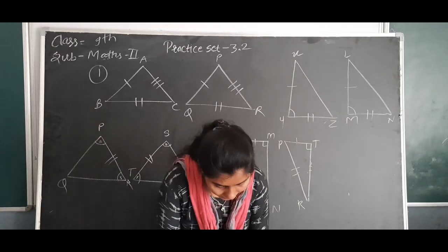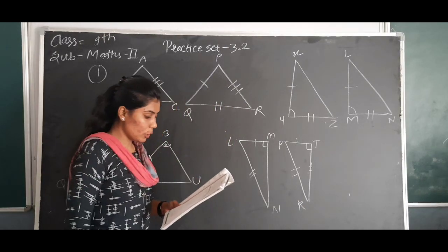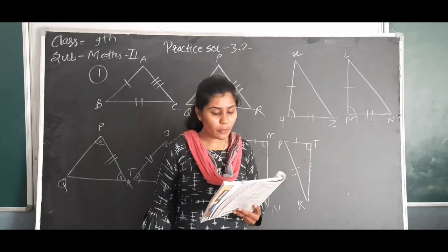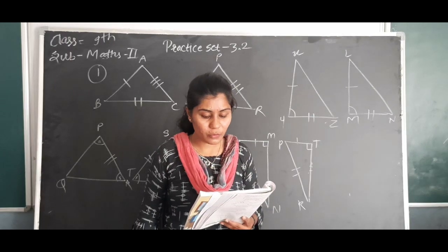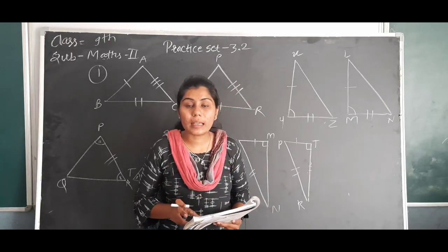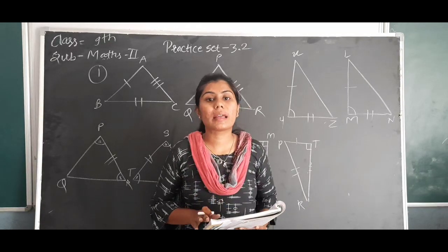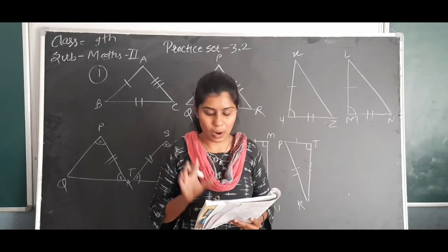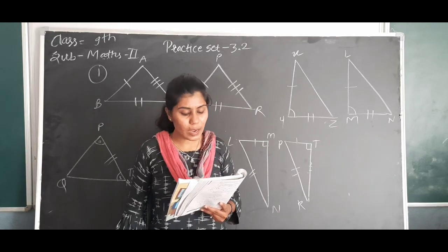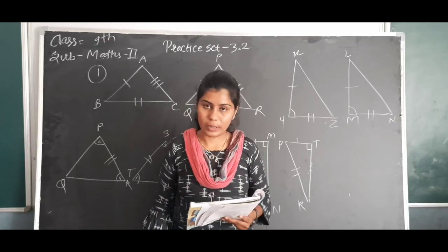First question: in each of the examples given below, a pair of triangles is shown. Equal parts of triangles in each pair are marked with the same sign. Observe the figure and state the test by which the triangles in each pair are congruent.